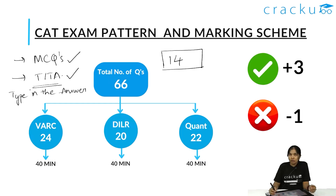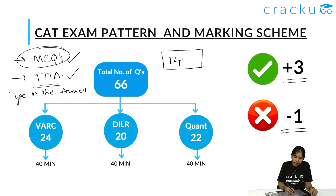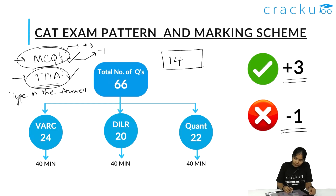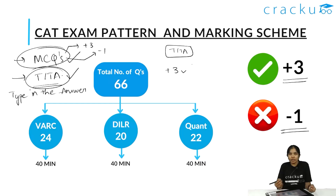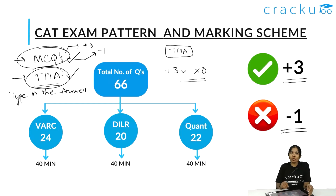Coming to the marking scheme: for every correct answer you'll be awarded three marks, and for every wrong MCQ answer, one mark will be deducted. For TITA questions, correct answers earn three marks and no mark is deducted for wrong answers. So it is advisable to attempt all the TITA questions.